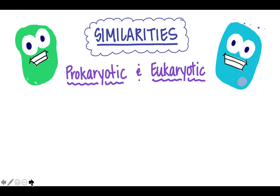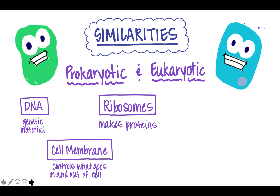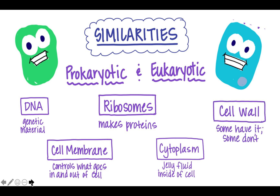Let's recap the similarities between prokaryotic and eukaryotic cells. Both have DNA that carries genetic material. Both have a cell membrane that controls what goes in and out of the cell. Both have ribosomes that make proteins. Both have cytoplasm, the jelly fluid inside the cell. And some prokaryotic cells have a cell wall, and some eukaryotic cells have a cell wall — some don't.